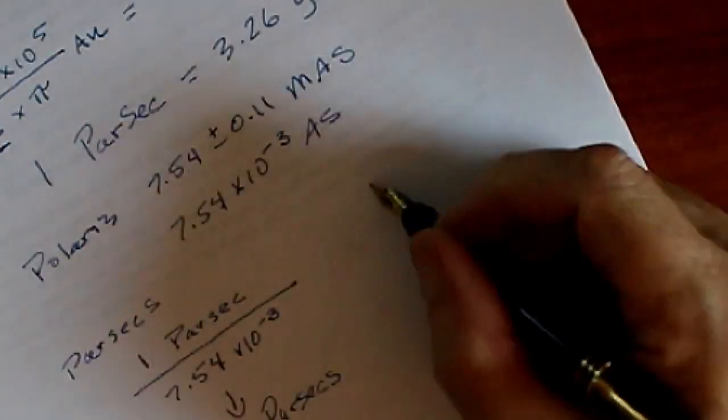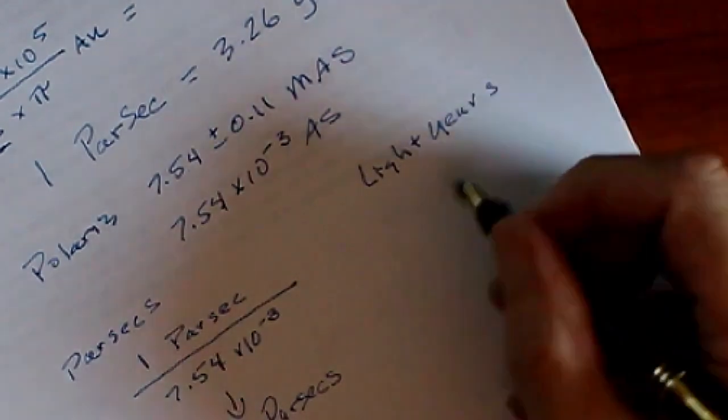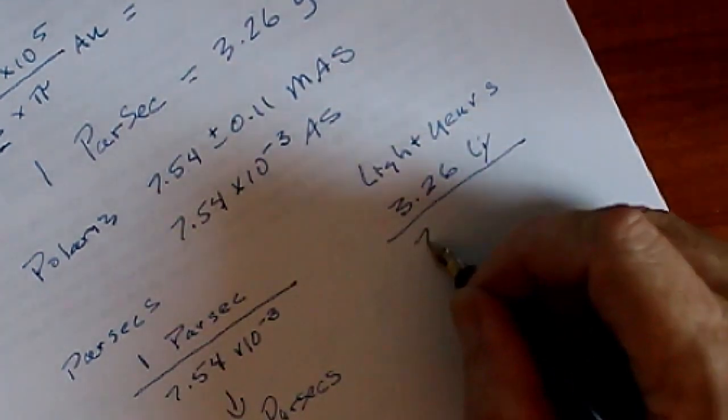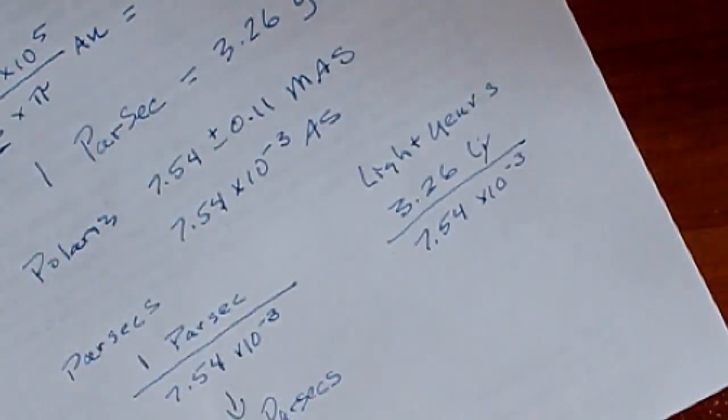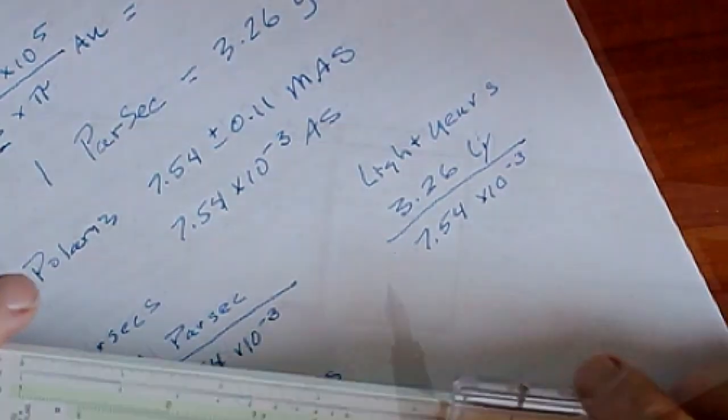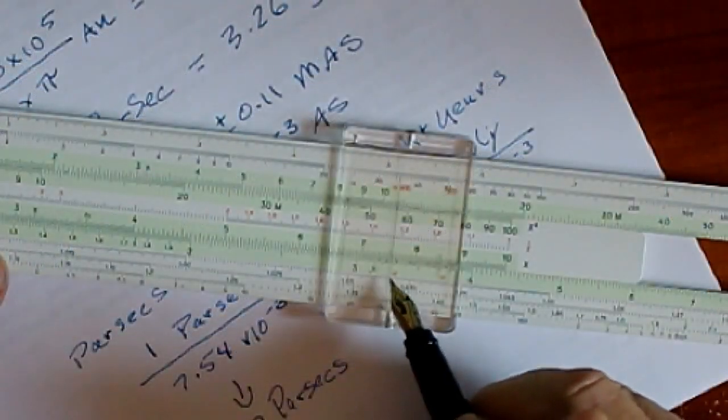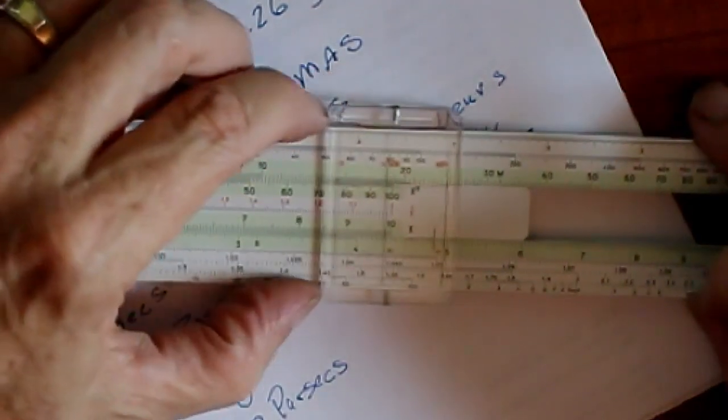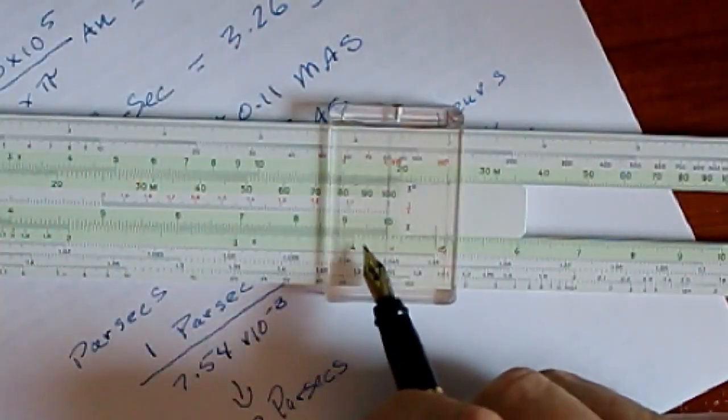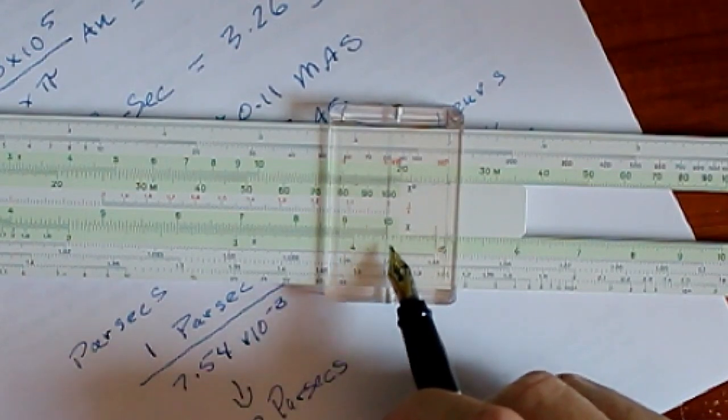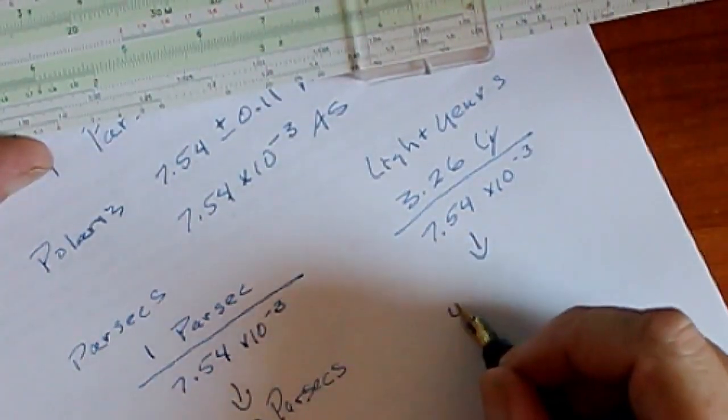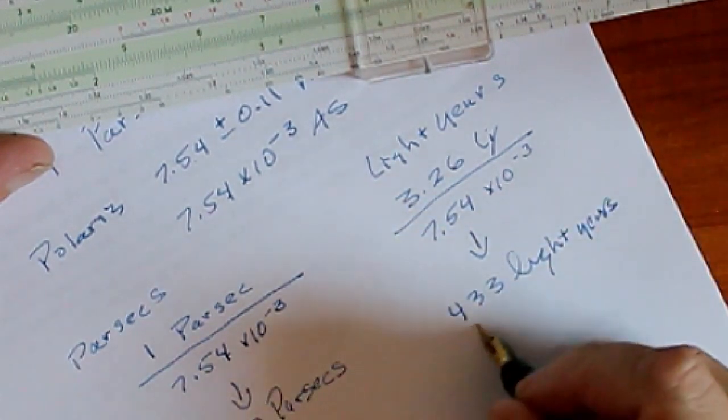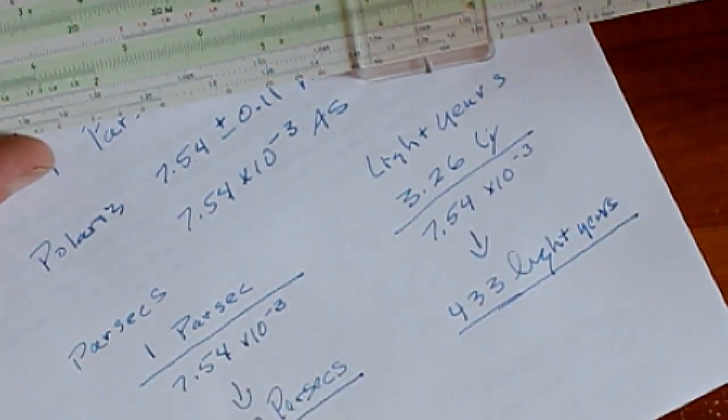Likewise, we can do it with light years. We'll take 3.26 light years, divide that by 7.54 times 10 to the negative 3, and we'll do that right here. So once again, the number that we're doing something to is 3.26, and what are we doing to it? We're dividing it by 7.54, and here's our answer right here. So that's 4.123, about 3. So the answer here is 433 light years. And that's the distance to Polaris.